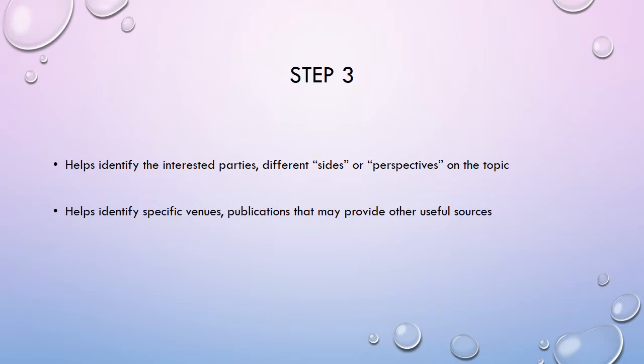Step three is important because it can help you identify the interested parties and the different sides or perspectives on the topic, because you'll be seeing where they publish. There might be particular journals or venues that are devoted to exploring one side or one aspect of the issue. It can also help identify those venues or publications that are going to be useful for other sources. If you find there is a journal devoted to education, that journal is something you want to look through — there might be other articles related to it besides the ones you've already found. So it can help you identify where else you want to look when you're doing research.